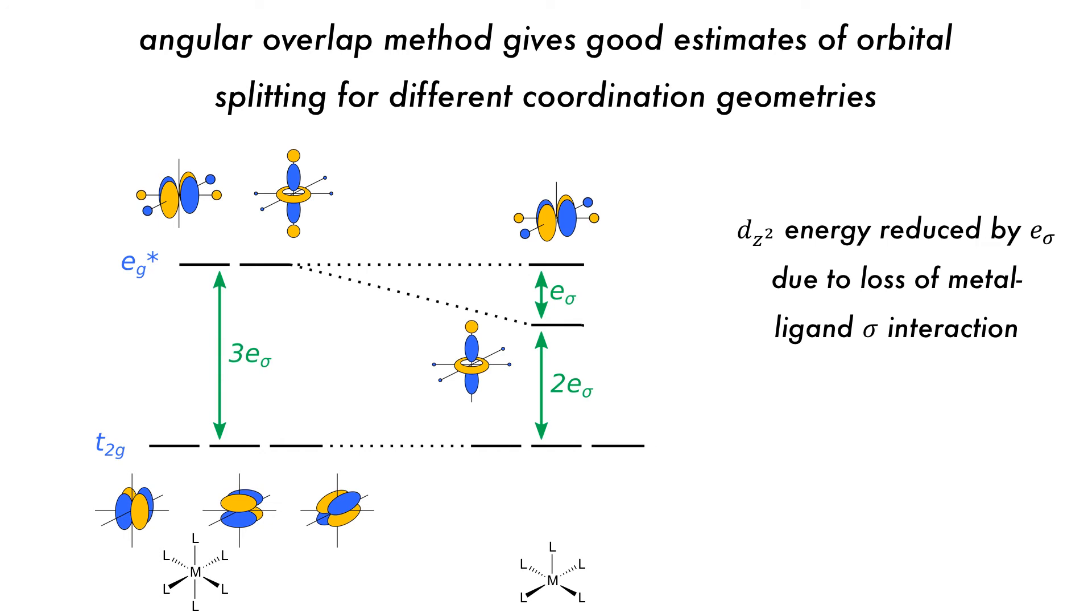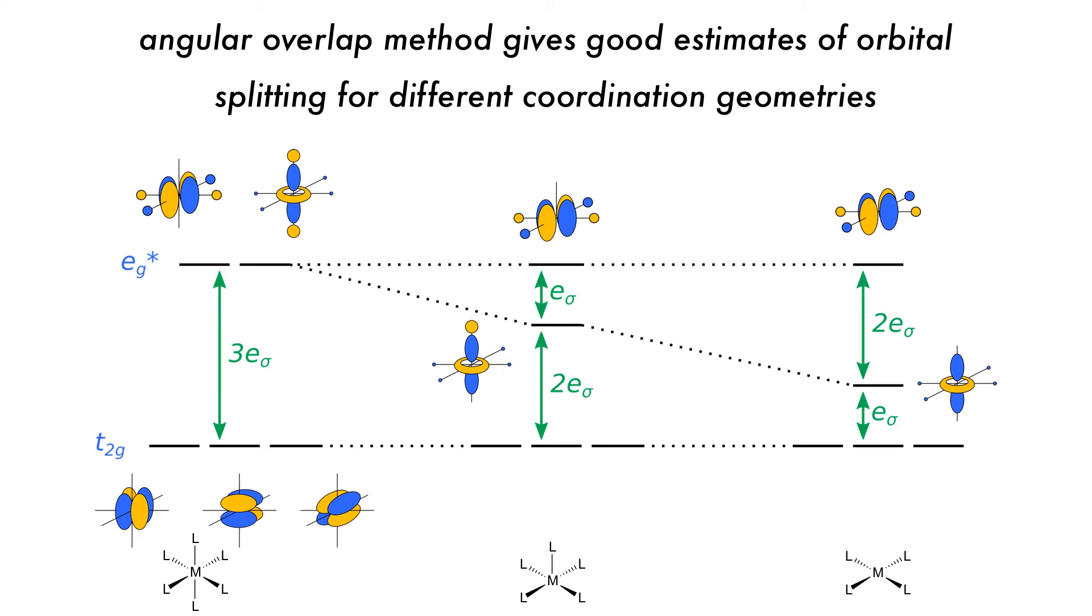For a square pyramidal system, one ligand along the z-axis is removed. This will reduce the energy of the dz-squared orbital by e-sigma due to the loss of this interaction. Then, by removing another ligand on the z-axis, the d-orbital splitting diagram for a square planar complex is derived, as the energy of the dz-squared orbital is further reduced by e-sigma.